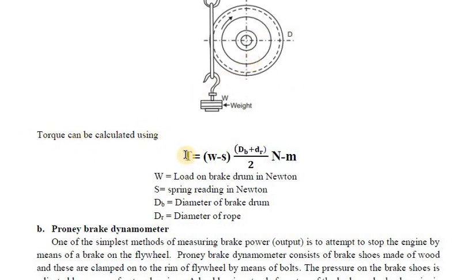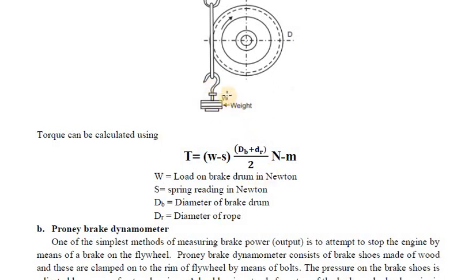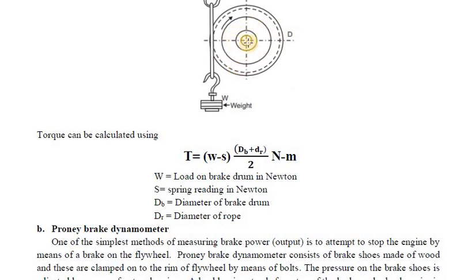The torque T is calculated as: T = (W − S) × (Db + Dr) / 2, where W is the load on the brake drum in Newtons (convert from kg by multiplying by 9.81), S is the spring balance reading in Newtons, Db is the diameter of the brake drum, and Dr is the diameter of the rope. Using these values, you can find the torque output of the crankshaft directly.